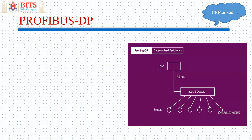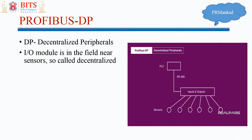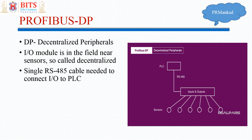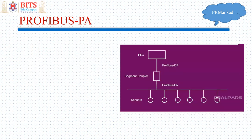Profibus DP stands for Decentralized Peripherals. Here, all the I/O modules that were previously connected near the PLC are moved to the field, and all sensors are connected to the I/O module. A single RS-485 link runs from the field to the central PLC. The devices or peripherals are thus decentralized — hence it is called Decentralized Peripherals. The I/O module is in the field near the sensors, and a single RS-485 cable connects it to the PLC.